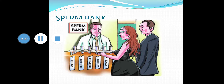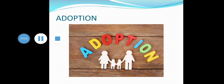Sperm bank or semen bank is a place which collects, stores, and provides human sperm or semen. The semen is provided by healthy males called sperm donors. The sperm are stored by cryopreservation method at very low temperature. The last option is adoption — a legal process by which a couple or single parent gets legal rights, privileges, and responsibilities associated with a biological child for the upbringing of the adopted child.